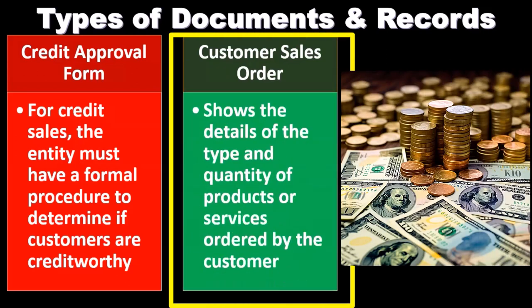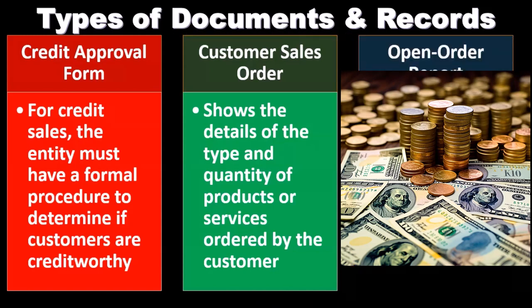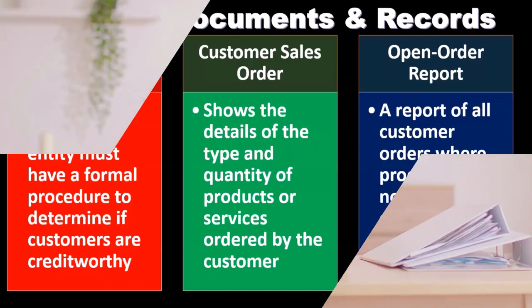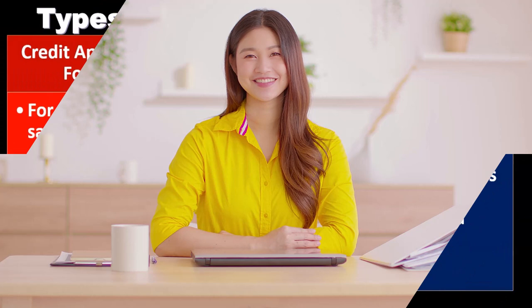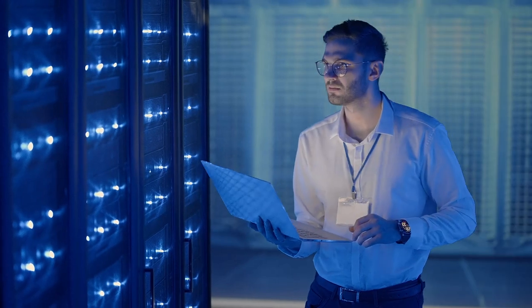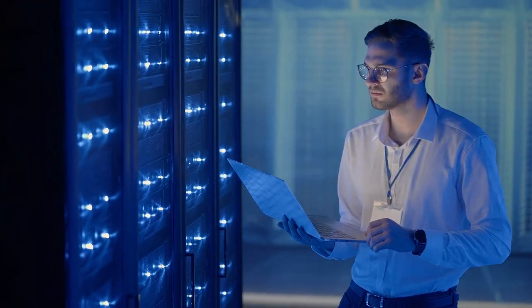The customer sales order shows the details of the type and quantity of products or services ordered by the customer. Next is the open order report — a report for all customer orders where processing has not been completed. This is important because if the work has not yet been done, we typically shouldn't be recording revenue until the point in time that the work is done. We need to understand when revenue will be recognized so we can test that system.